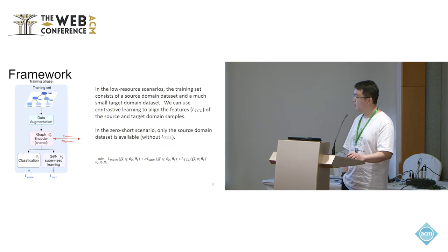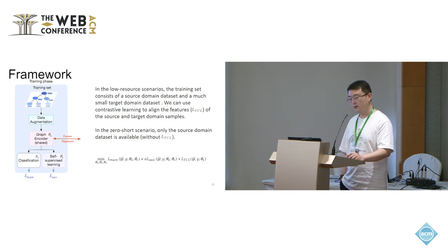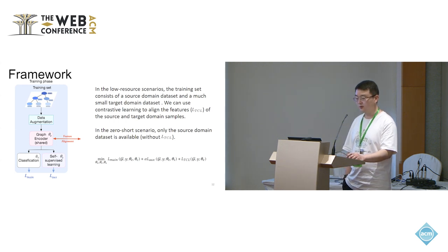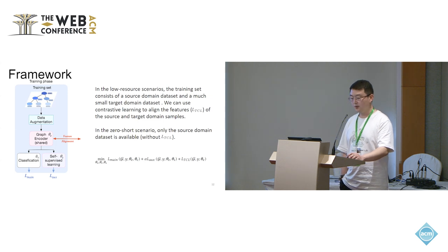During the training phase, we train all parameters for both the rumor detection task, the main task, and the auxiliary self-supervised learning task along with the feature alignment. Note that in the low-resource setting, the training set consists of some source domain dataset and a small target domain dataset. We can use contrastive learning to align the features of source and target domain samples. In the zero-shot setting, only data from source domain is available for training, so we skip the contrastive learning step. After training the model with data from source domain, we obtain the embeddings for each source domain sample. Thus, we could compute the mean and covariance matrix of source domain samples, which are then utilized for distribution alignment during the test time training phase.